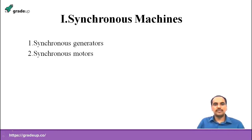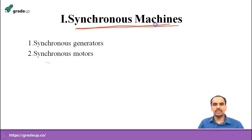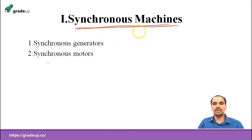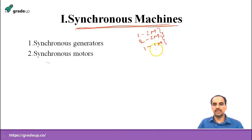The first important topic in machines is synchronous machines — this is the most important topic. Machines are classified into synchronous machines, induction machines, transformers, and DC machines, out of which synchronous machines is the very important topic. From this we can expect at least one two-mark question, possibly two two-mark questions, or a total of three to four marks from synchronous machines.